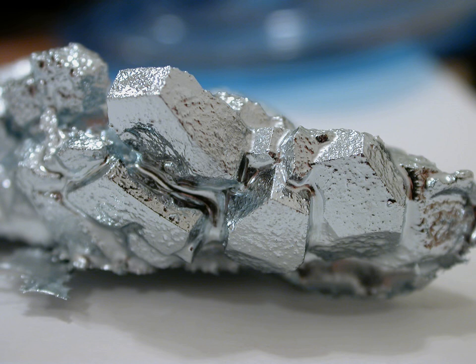Gallium has 31 known isotopes, ranging in mass number from 56 to 86. Only two isotopes are stable and occur naturally, gallium-69 and gallium-71.